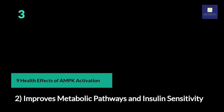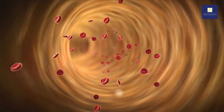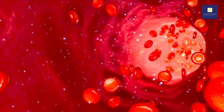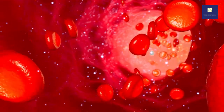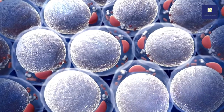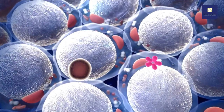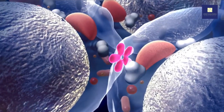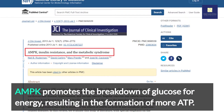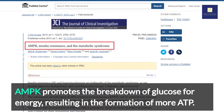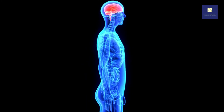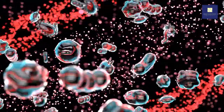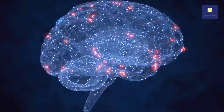2. Improves Metabolic Pathways and Insulin Sensitivity. AMPK is a key regulator of lipid and glucose metabolism in the cell. AMPK activation promotes glucose uptake and utilization in order to maintain blood sugar homeostasis. Simultaneously, it reduces glycogen synthesis. Signaling pathways can increase glucose uptake within muscles, ensuring that they have a constant source of fuel. AMPK also promotes the breakdown of glucose for energy, resulting in the formation of more ATP. If hypothalamic AMPK detects a lack of cellular energy, it can increase glucose production. Glucose is the body's preferred energy source — the brain makes extensive use of it.